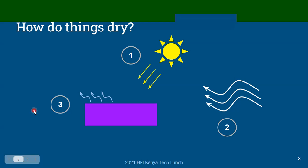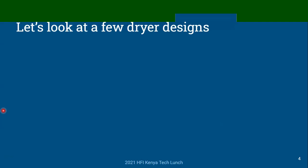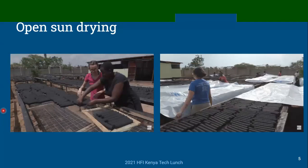So we have two major modes: heat, and flow of dry air, which together result in water removal via the concentration gradient. Now let's look at a few dryer designs through that lens — what in each design is actually driving the drying process. In all of them, both modes are at play, perhaps in different strengths. The first design everyone is familiar with is open sun drying. Here are some photos from Uganda.